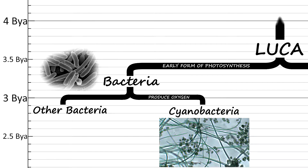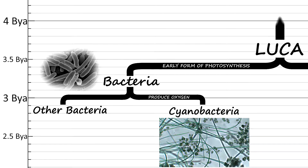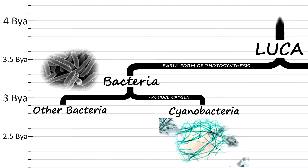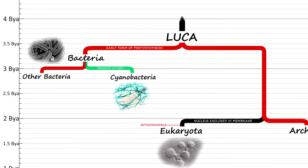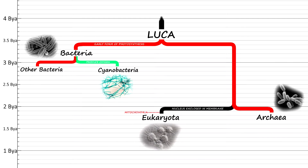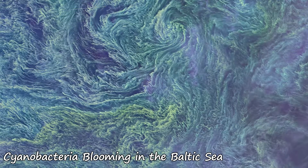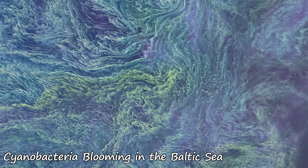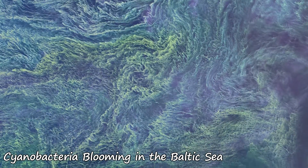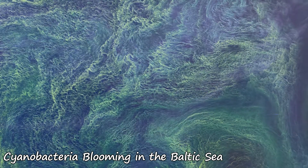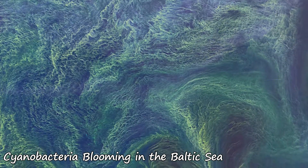Organisms of this group are sometimes also called blue-green algae, but officially the term algae is only used for eukaryotes. Cyanobacteria are the only prokaryotes that produce oxygen, and they had a huge impact on earth's atmosphere, greatly increasing the oxygen.